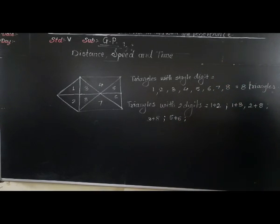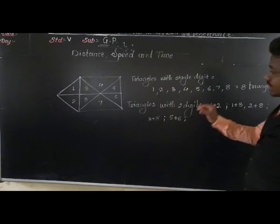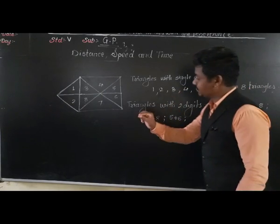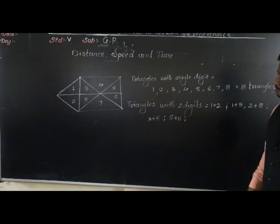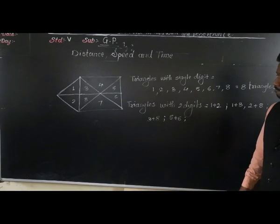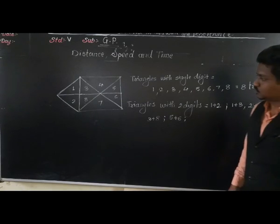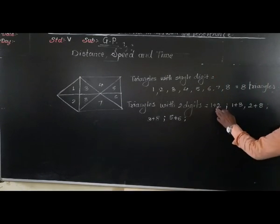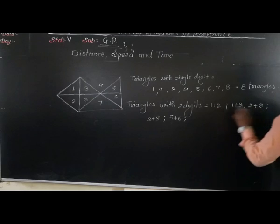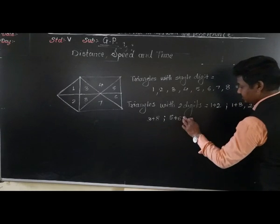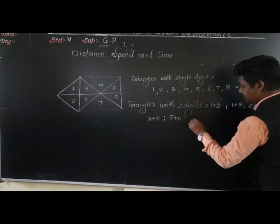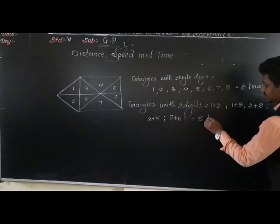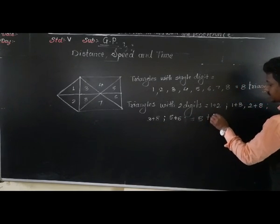Is there any other triangle formed by 2 digits? No. So total: 1, 2, 3, 4, and 5 — we got 5 triangles with 2 digits.